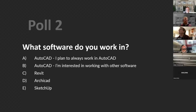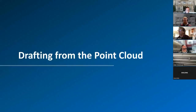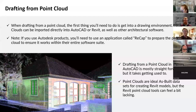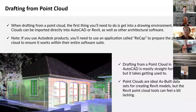Now let's dive into drafting from the point cloud. When drafting from a point cloud, the first thing you'll need to do is get into a drawing environment — this can be imported directly into AutoCAD or Revit as well as other architectural software. If you use Autodesk products, you'll need to use an application called ReCap to prepare the point cloud to ensure it works within their entire software suite. Drafting from a point cloud in CAD is pretty straightforward but takes some getting used to. There are lots of options in CAD to color, slice, crop, move, and rotate the cloud in different ways.